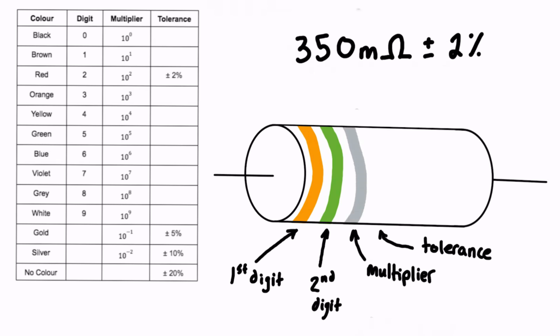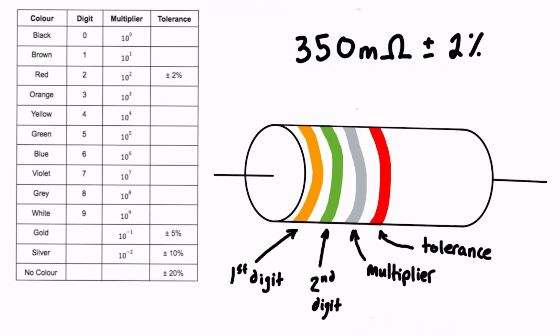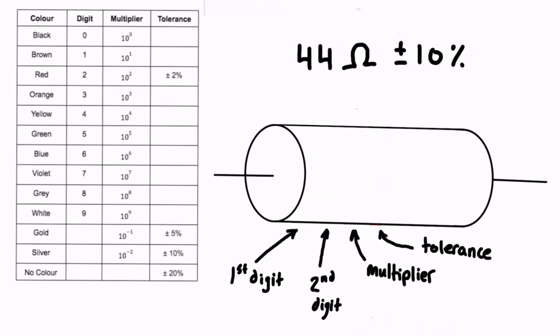If this looks gray on your screen, YouTube may just be changing the colors, but the idea is that I've drawn a silver line there. For our tolerance we've got 2%, so we look for 2% in the table — that corresponds to red. We draw on red as our final color band for this 350 milliohm resistor with a plus or minus 2% tolerance.